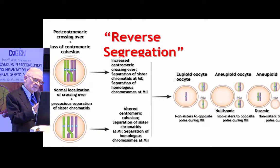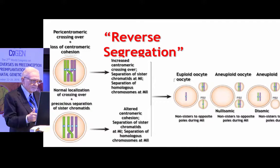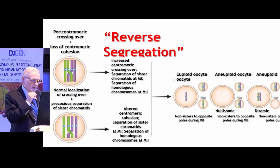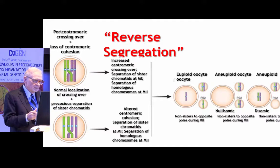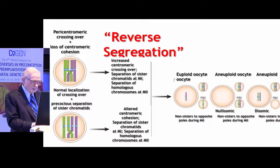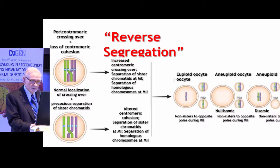The papers refer to reverse segregation as something frequent. I'm not sure they give a number, but it would not surprise me if this were also part of premature separation of chromatids, as well as instances where there is no chiasma formed, creating an unbalanced gamete.